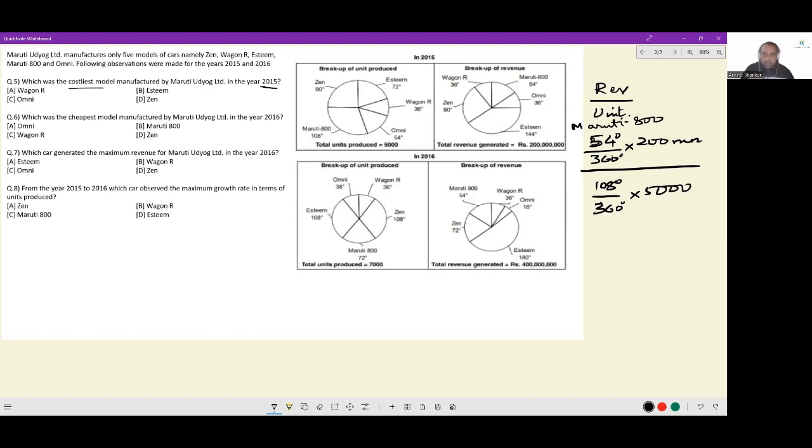So when I do it for Maruti 800, let us do it for Omni now. For Omni, it would be 36 degrees by 360 degrees into 200 million. And the breakup of units produced for Omni is 54 degrees by 360 degrees into 5000. If I have to compare these two fractions, can you see? This 200 million is identical, so it has no bearing on comparison. This 5000 is identical, so it has no bearing on comparison. This 360 and this 360 has no bearing on comparison.